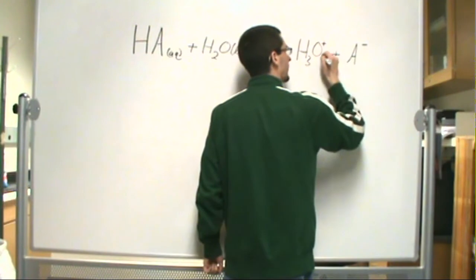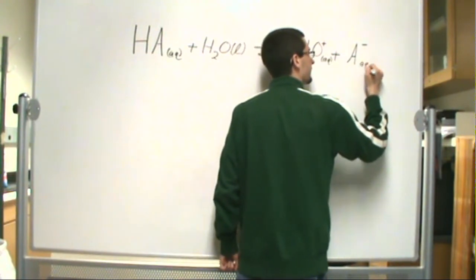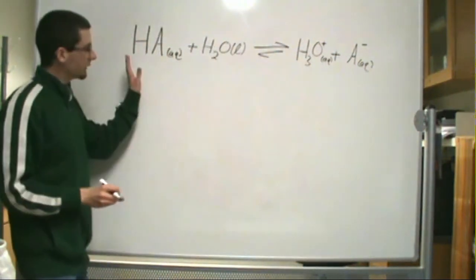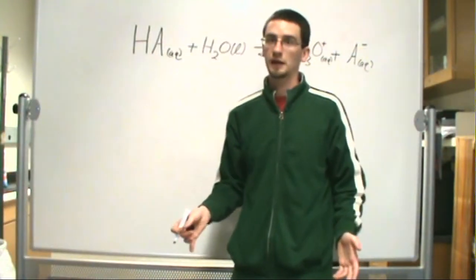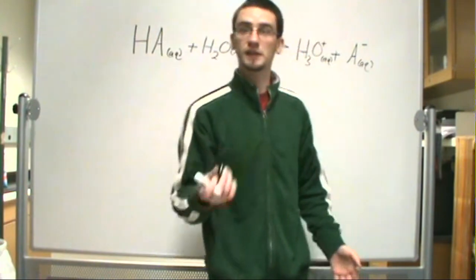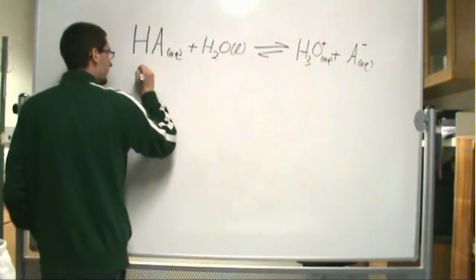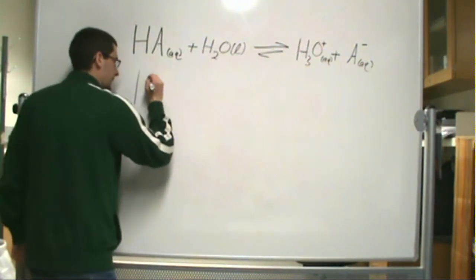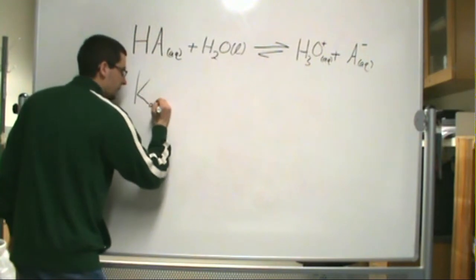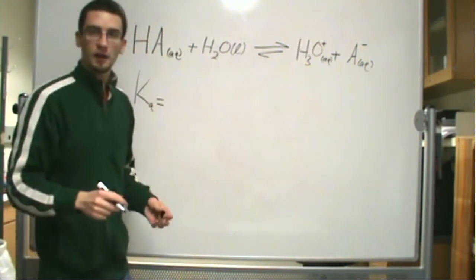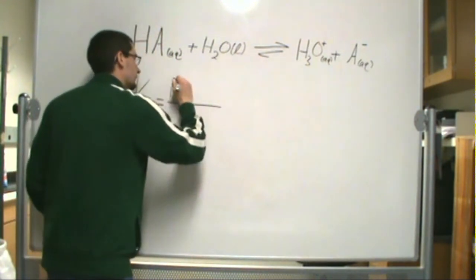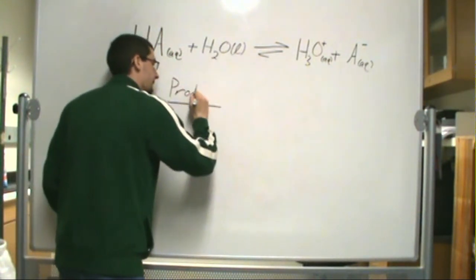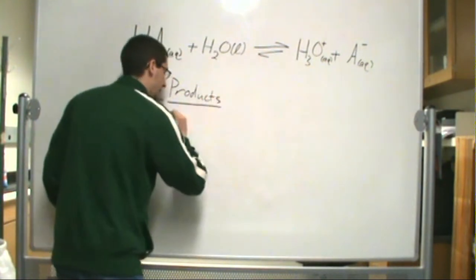Notice how I'm writing Aq under each one of these. Now, if we notice, this is an equilibrium, which means we can write an equilibrium constant for this reaction. It's known as Ka. And just like a normal equilibrium constant, it's defined by products over reactants.